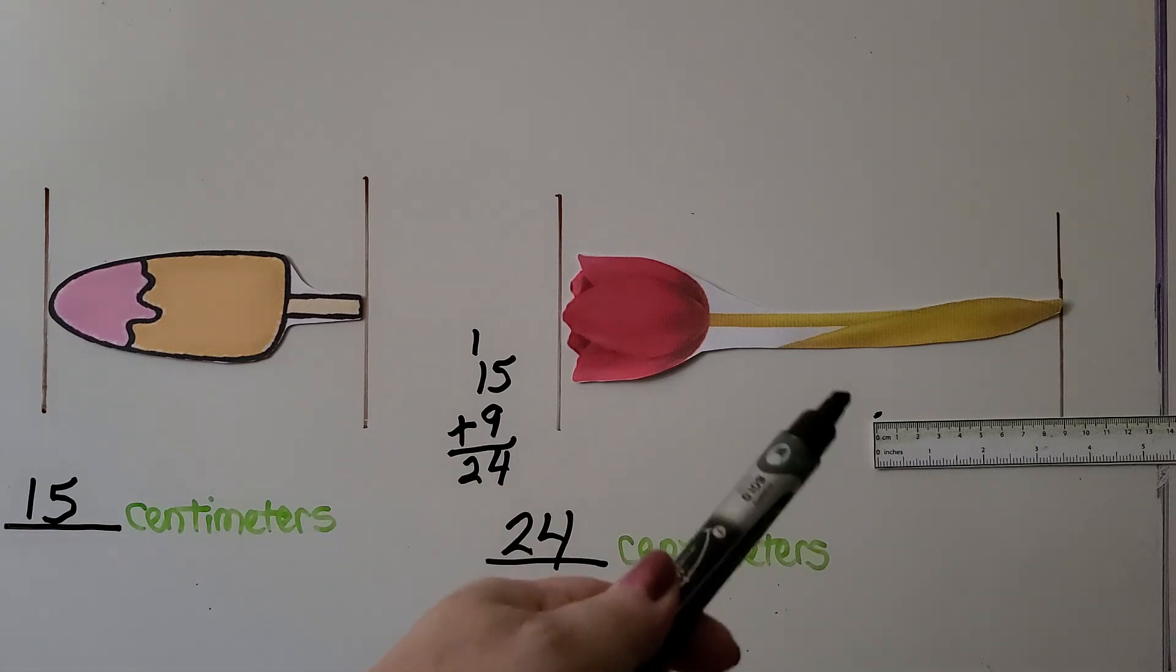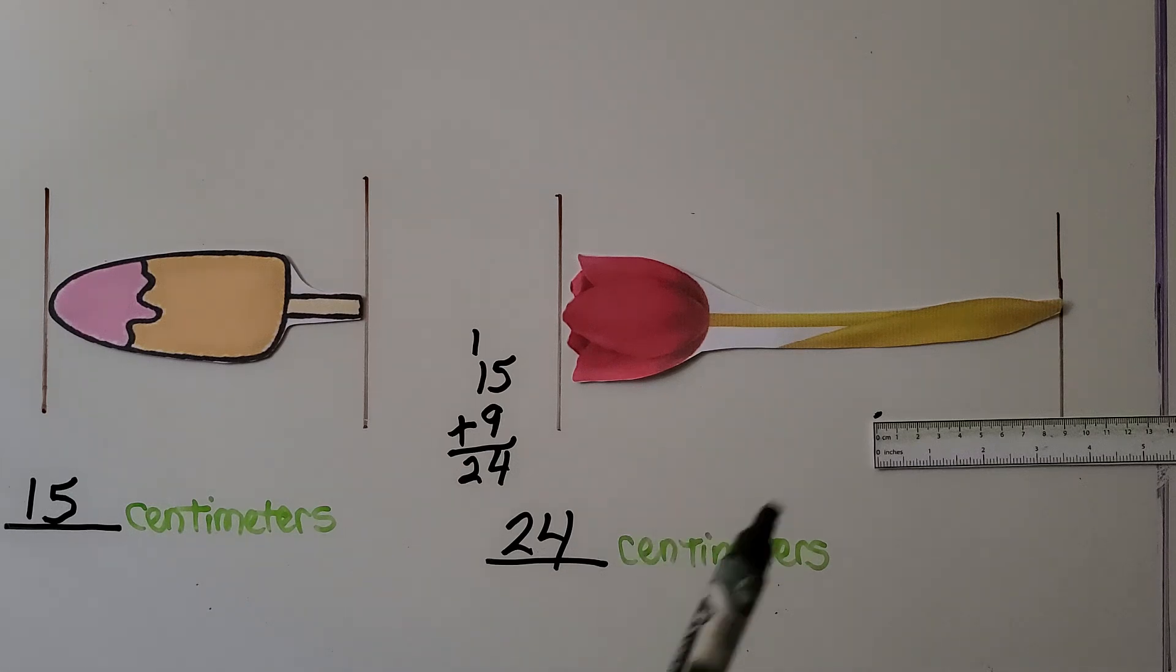Now some of you might have a centimeter ruler that's much longer and you won't have to use it twice. Some of you will have a shorter centimeter ruler and you will have to use it more than once to measure something that's longer.